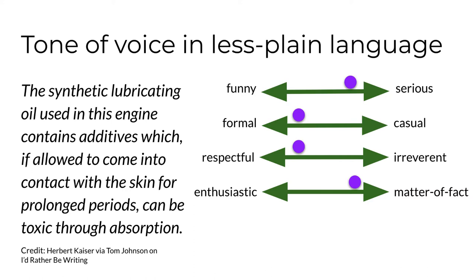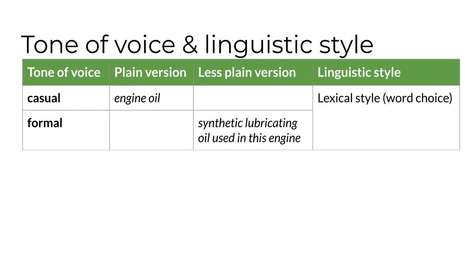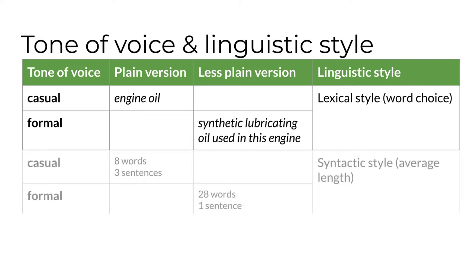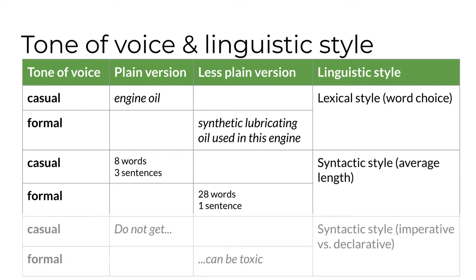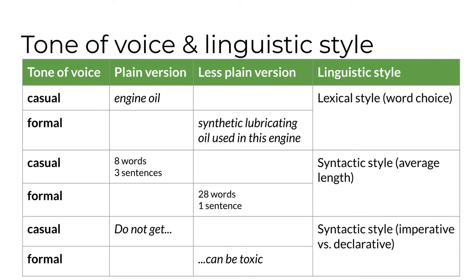Let's consider how linguistic style or language variation was used to manipulate the tone of voice in the plain and less plain versions of this message about the dangers of engine oil. Lexical style describes one difference: the plain version substitutes 'engine oil' for the longer noun phrase in the less plain version. There are two syntactic style differences as well. The plain version has three sentences with an average length of eight words, while the less plain version is one sentence with 28 words — this difference makes the plain version more casual. In addition, the plain version uses the imperative structure 'do not get,' while the less plain version uses 'oil can be toxic' in a declarative structure. This makes the plain version's function as a directive to the reader more explicit and personal, and hence more casual.